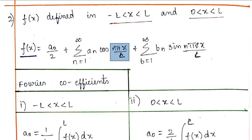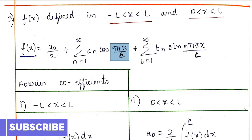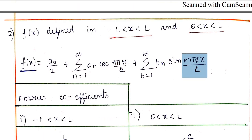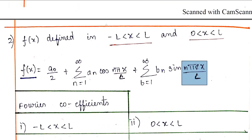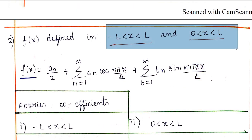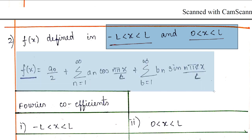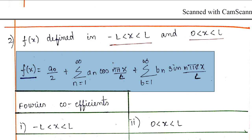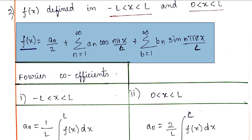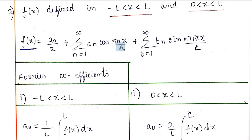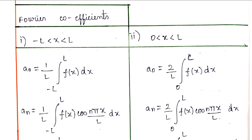The difference is cos(nπx/l). That's the difference between the cases. The difference between the coefficients is 1 by L and 2 by L. If you have Fourier coefficients and the problems, you can use this formula to manage any problems.